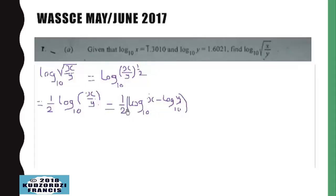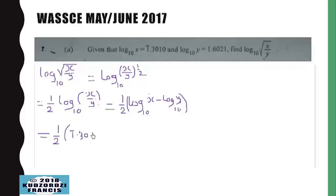Now we reach this step, and the next thing we do is substitute these values: log base 10 of x equals 1.3010 and log base 10 of y equals 1.6021. So this will be equal to one over two multiplied by 1.3010 minus 1.6021.